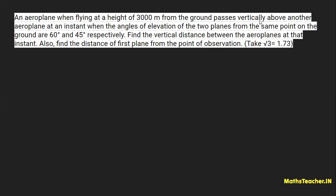Basically, there is an aeroplane flying at a height of 3000 meters from the ground, and this aeroplane is flying vertically above another aeroplane. So the 3000 meter distance is the height of the first aeroplane, and there is a second aeroplane flying below it. You can take a hint from the two angles: since the first aeroplane is at a greater height, its angle of elevation is 60 degrees, which is more than the 45 degrees for the lower one.